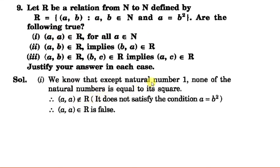So we have written this: except natural number 1, none of the natural numbers is equal to square of itself, that is (a,a) does not belong to R. So the first statement is false.